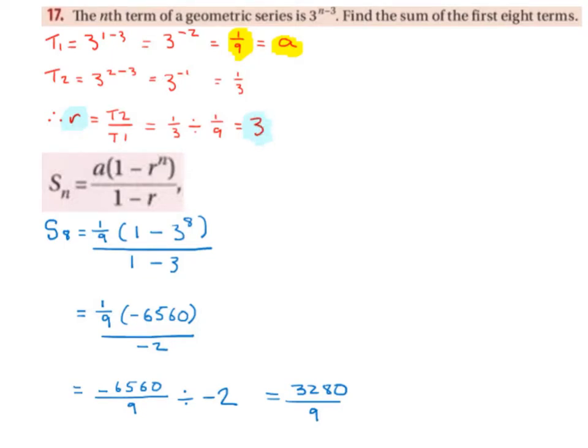Then we use the geometric series formula: Sn equals a times 1 minus r to the power of n, divided by 1 minus r. We substitute a equals 1 over 9, and both r's for 3.